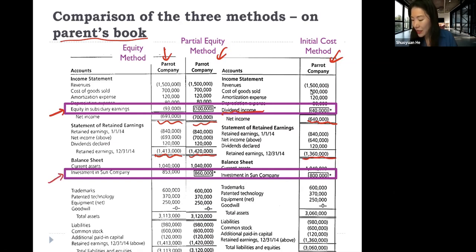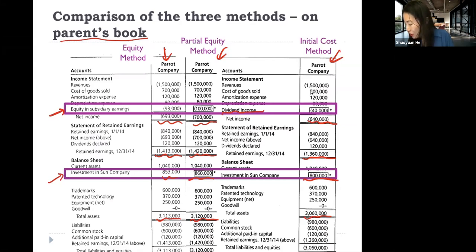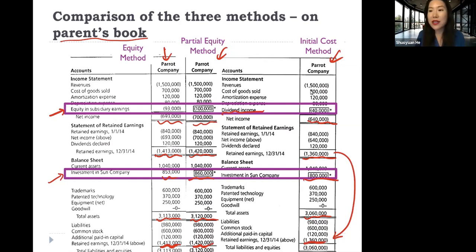Another major difference is in the investment account. The investment account balances will be very different, and this causes a difference in the total assets of the firm. And of course, ending retained earnings carried over to the balance sheet will also be different. So this is a comparison on the parent's book.